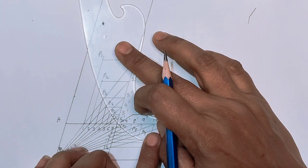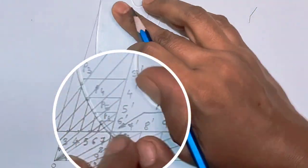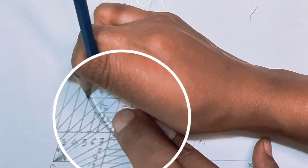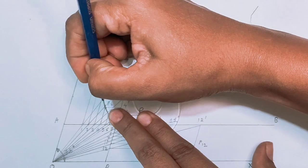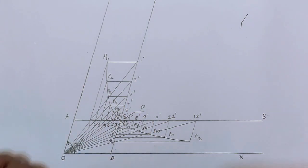And the last step: join all the points with the help of French curve to get required rectangular hyperbola. So this is all about rectangular hyperbola. Hope you like the session, thank you.